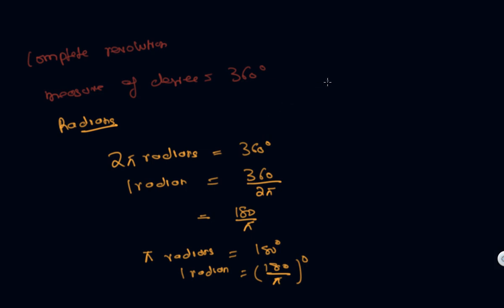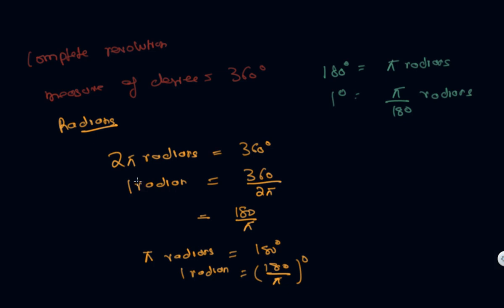So this is the relationship between radian and degree. Today we have completed the basic concepts of radians, degree measure of angles, and the sign convention of angles. This is all for the lecture — see you in the next lecture.